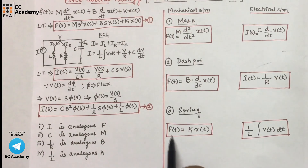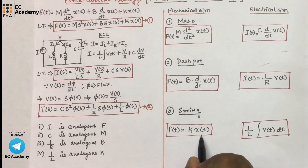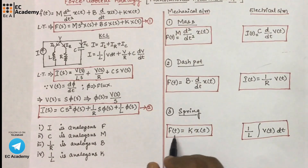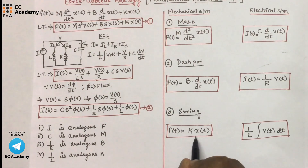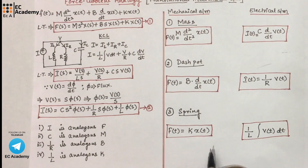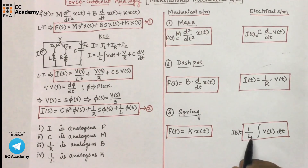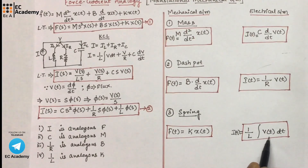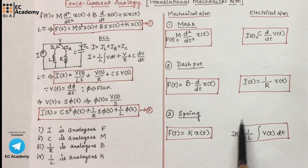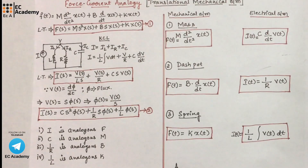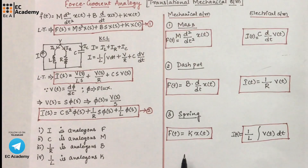The third element is spring. The differential equation for spring is F(t) = K·x(t). Here, reciprocal of inductor is analogous to spring K. So the differential equation F(t) = K·x(t) can be written as I(t) = (1/L)∫V(t) dt. These formulas are very important when writing a translational mechanical system and its analogous electrical system.